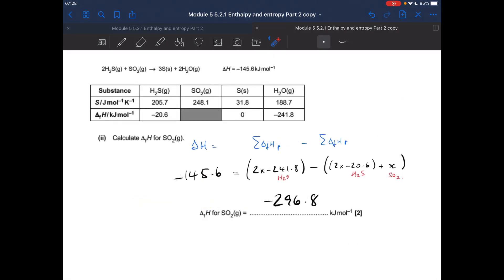So final part of the question now. We've got to calculate the enthalpy change of formation for SO2. So I've just copied out the equation and the table. Notice the SO2 is being greyed out because that's what we've got to calculate. So this value here, this delta H value, can be calculated from this equation. The sum of the enthalpy change of formation of the product minus the sum of the enthalpy change of formation of the reactants.